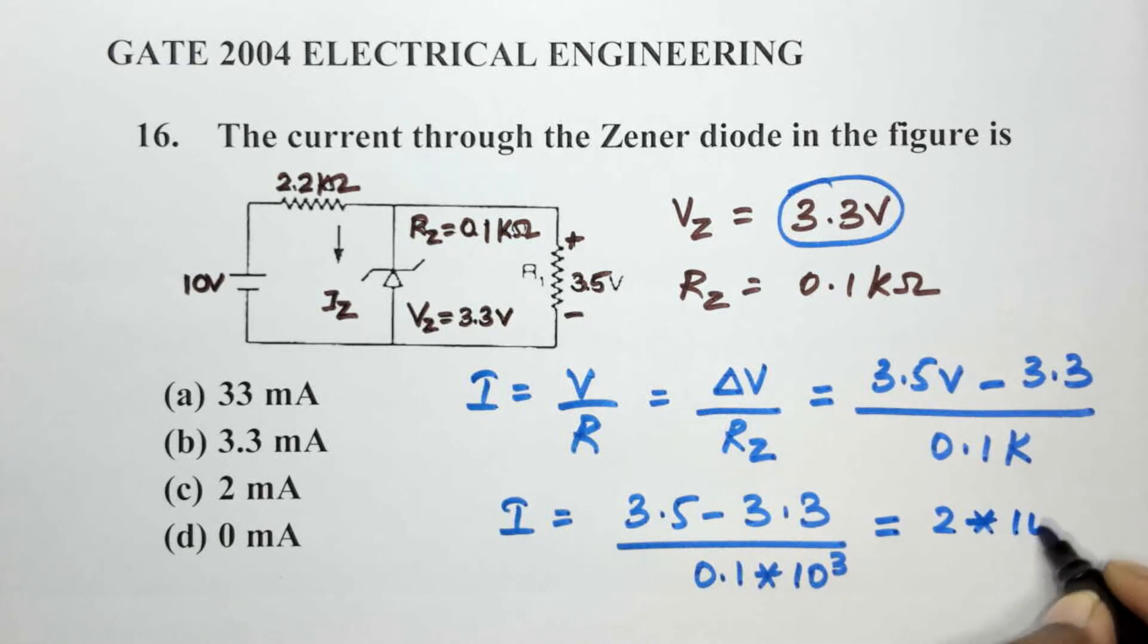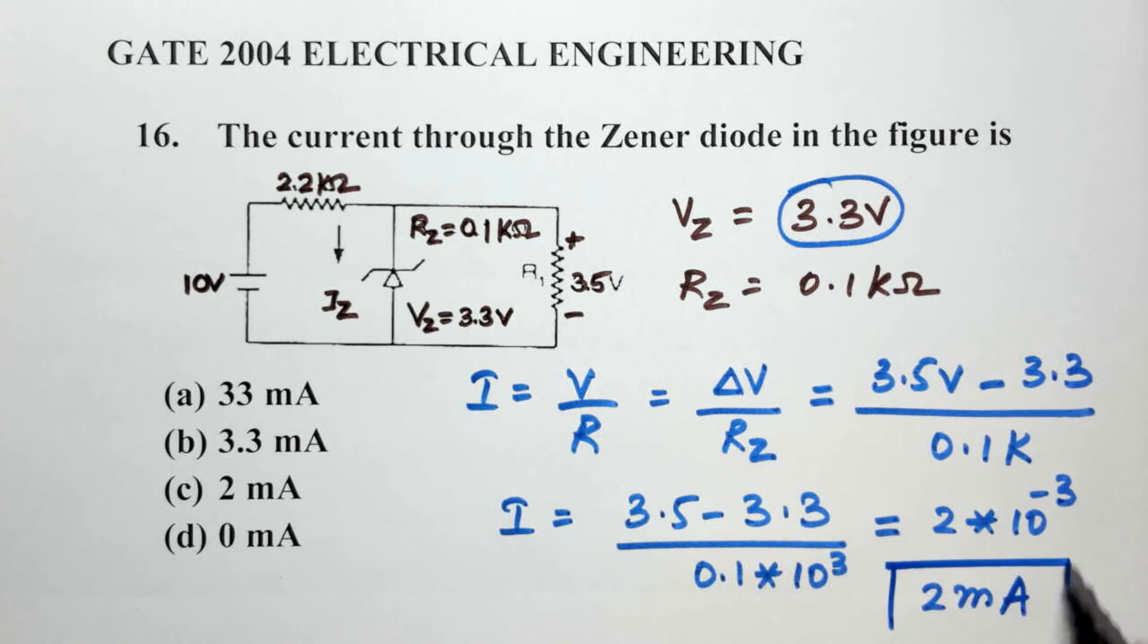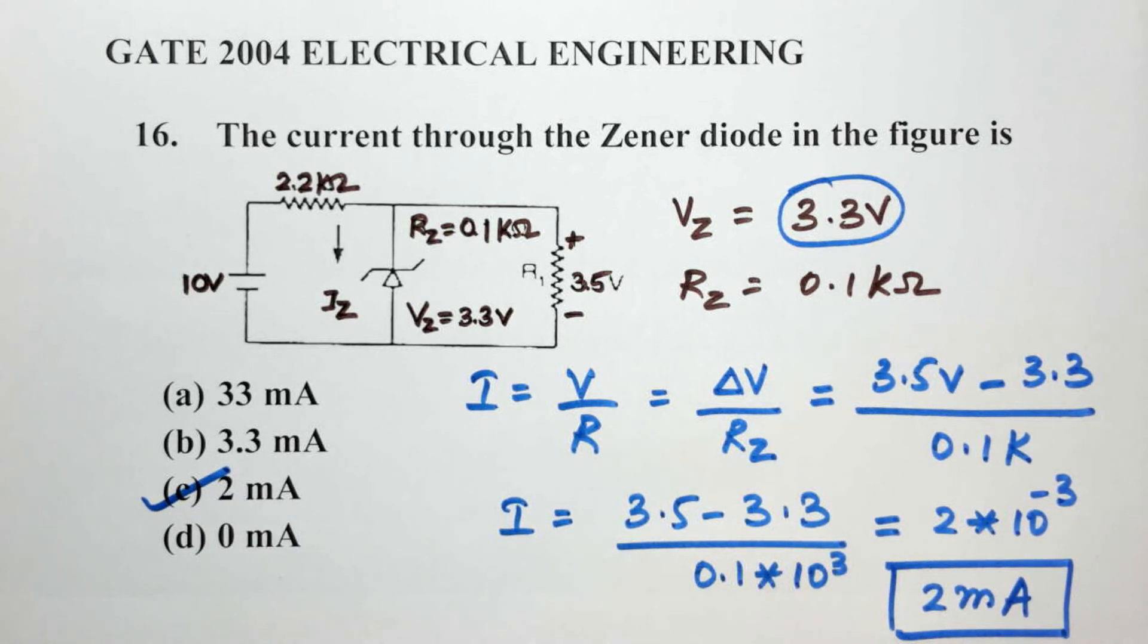Or 2 milliamps. So here for this problem, 2 milliamps is the current through the Zener diode, and that matches option C.